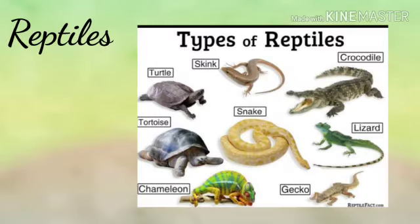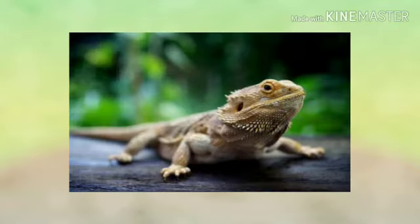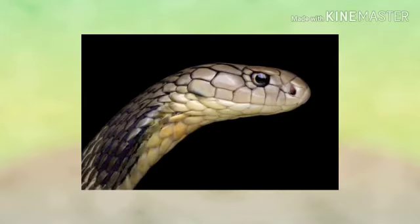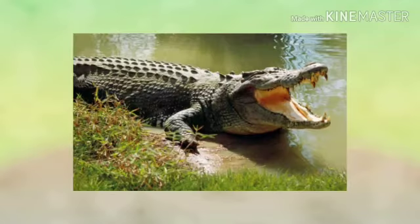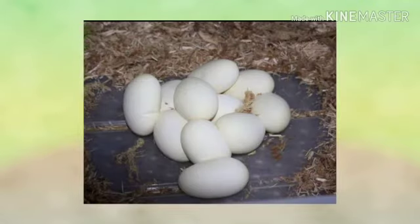Reptiles are vertebrates with scaly skin. Most of them have four legs, although snakes have lost their legs. Some reptiles live on land, but some, such as crocodiles, live in water. Reptiles reproduce by laying eggs on land. The dinosaurs were also reptiles.